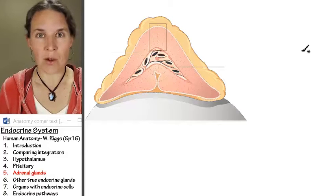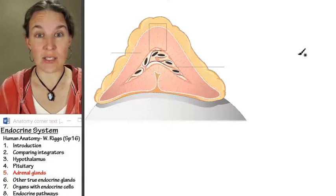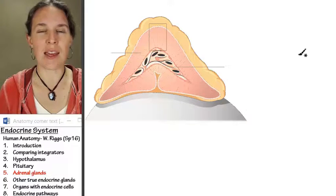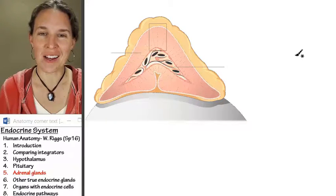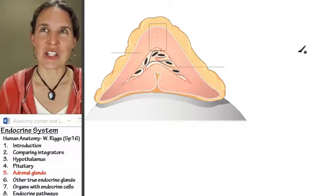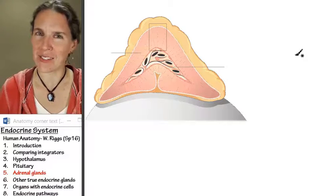So the adrenal glands are major players in the endocrine system, and they actually are also not entirely endocrine structure.